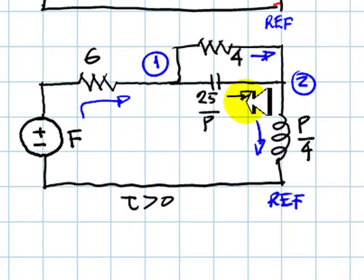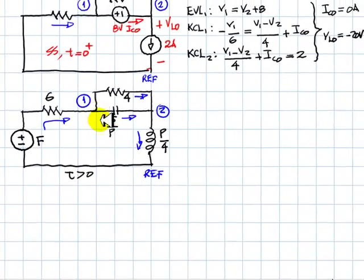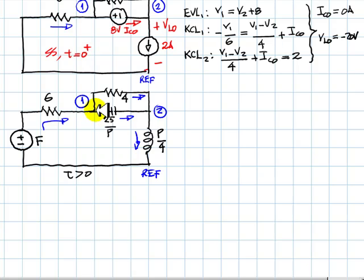Reference node 1, 2, and the branch currents arbitrarily chosen, almost here and here, but not here. This is already predetermined and so is this one, this direction. Let's write the equations. Two KCL equations, one for node 1 and one for node 2.